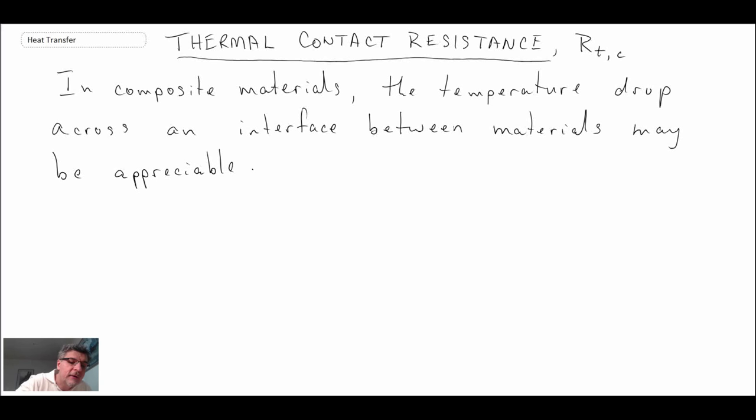We'll take a look at kind of an exaggerated version of what the contact might look like and then what the temperature profile may be for that particular scenario. So here we have two materials, material A and material B, and they are in contact with one another. And what I've done is I've exaggerated this surface finish, but any material is going to have surface roughness.